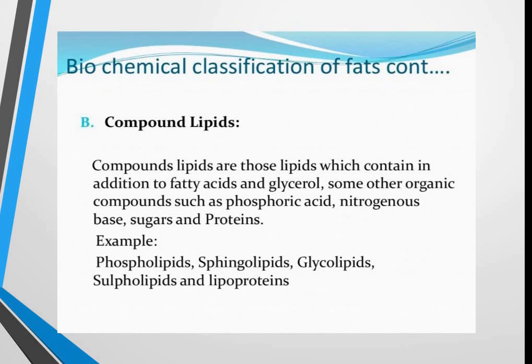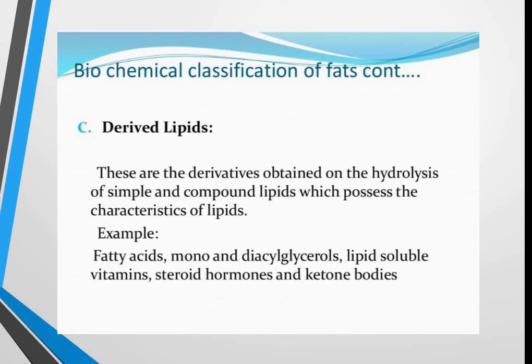The second category is compound lipids. Compound lipids are those lipids which contain, in addition to fatty acids and glycerol, some other organic compounds such as phosphoric acid, nitrogenous bases, sugars, or proteins. Examples include phospholipids, glycolipids, and sulpholipids, and lipoproteins.